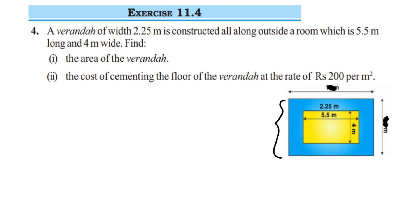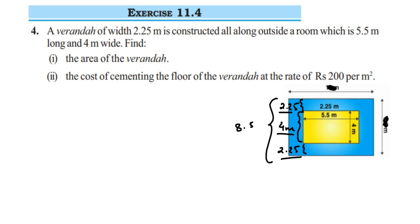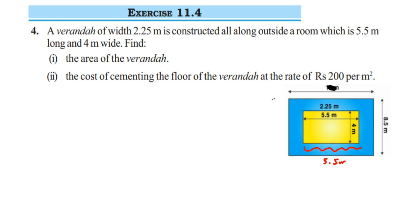Since the room dimensions are 5.5m and 4m, we add 2.25m on both sides. For the width: 4 + 2.25 + 2.25 = 8.5 meters. Similarly for the length: 5.5 + 2.25 + 2.25 = 10 meters. So the length and breadth of the room along with the veranda are 10 meters and 8.5 meters respectively.